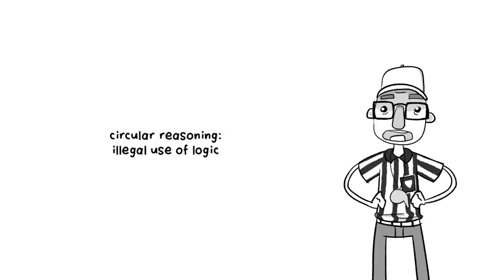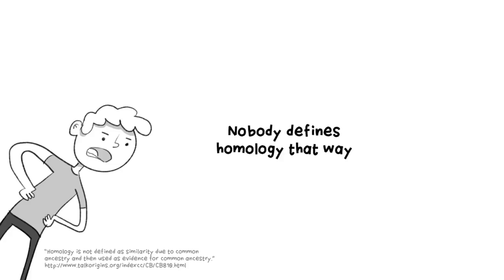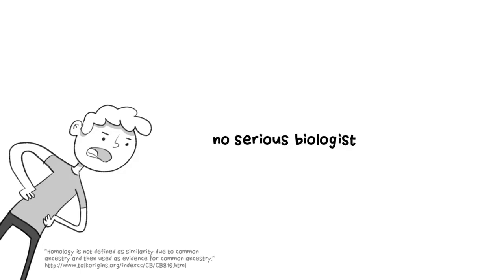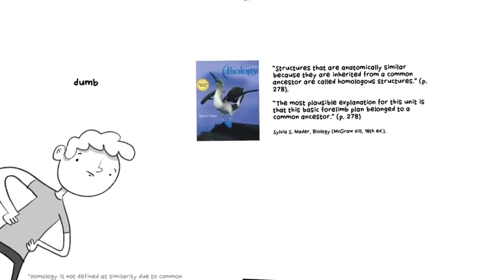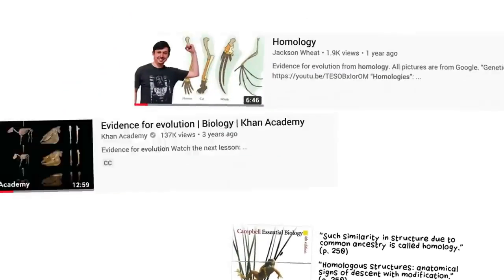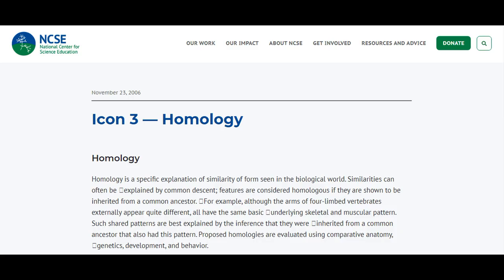LSS raises a flag of circular reasoning. No serious biologist could possibly make the mistake of defining homology as similarity due to common ancestry and then using it as evidence for evolution — while LSS actually cites the Talk Origins page that debunks his argument on the bottom left of the screen. The circular argumentation is still regularly used in high school and even college-level textbooks. The surprising thing is that many otherwise very smart people didn't realize this. The NCSE agrees that sometimes introductory textbooks explain the concepts inadequately due to limited space and recommends correcting this.